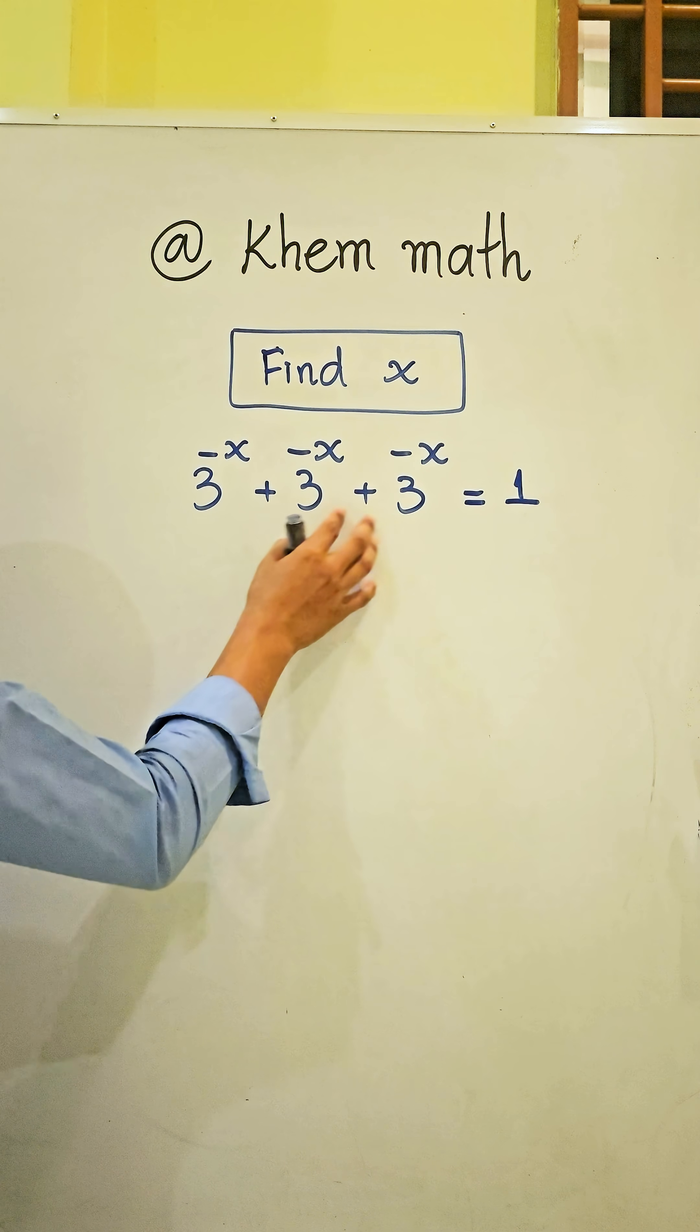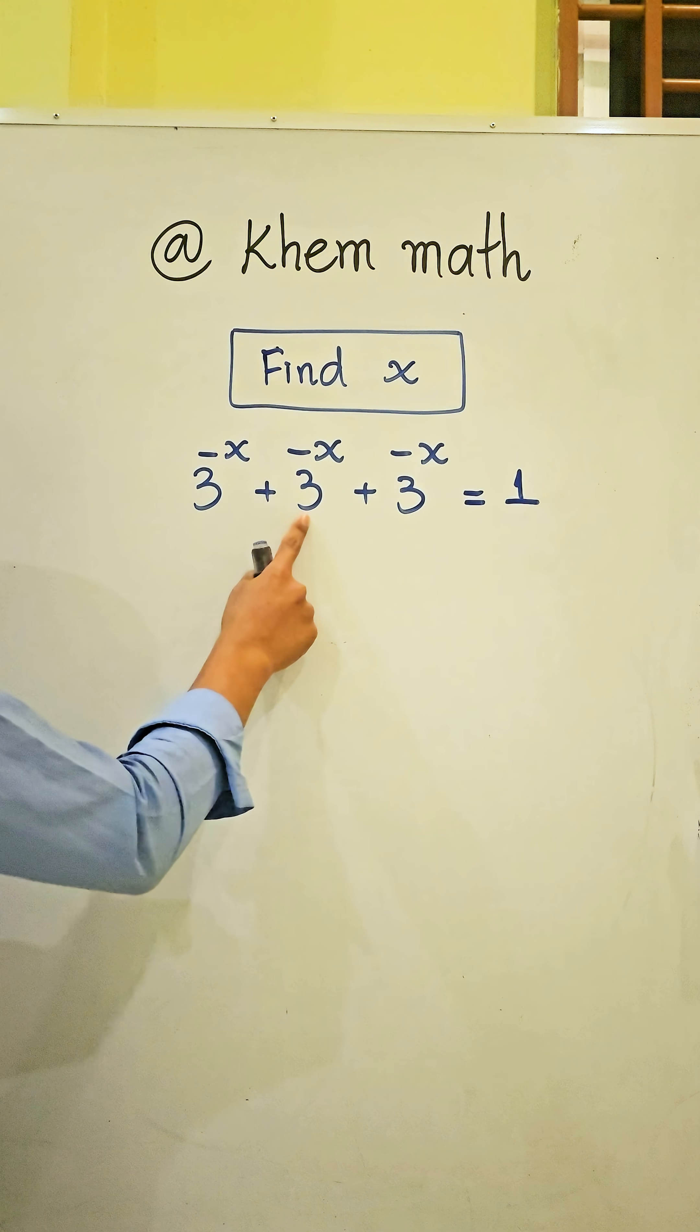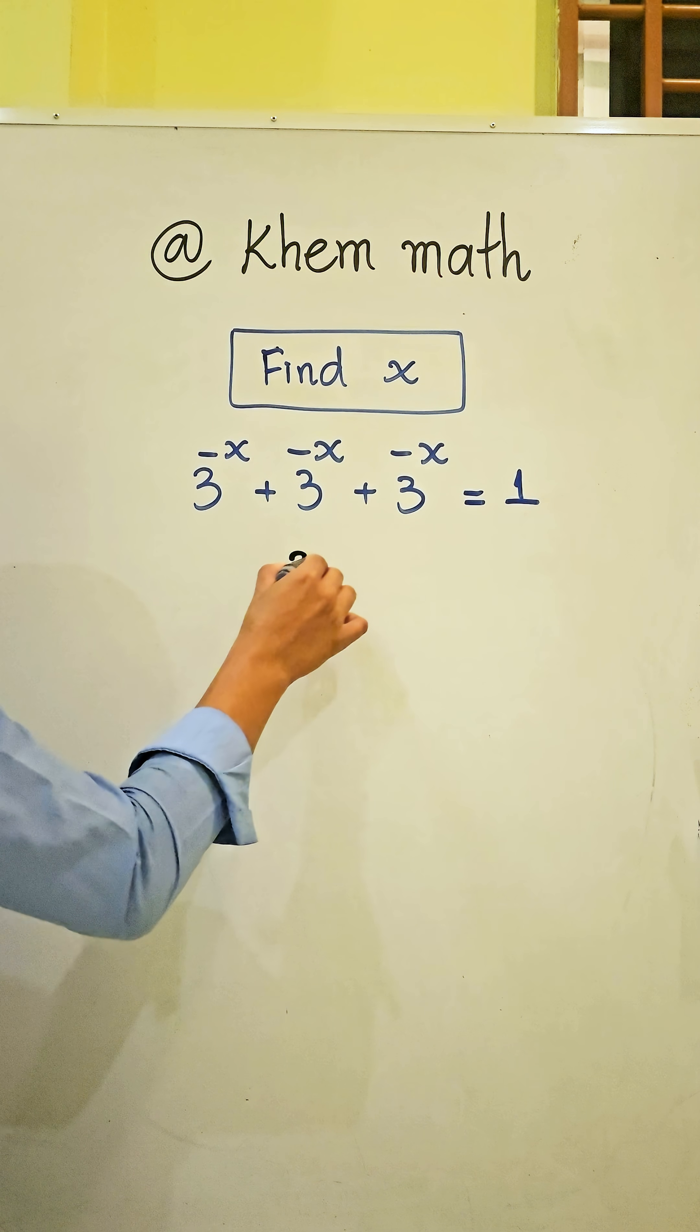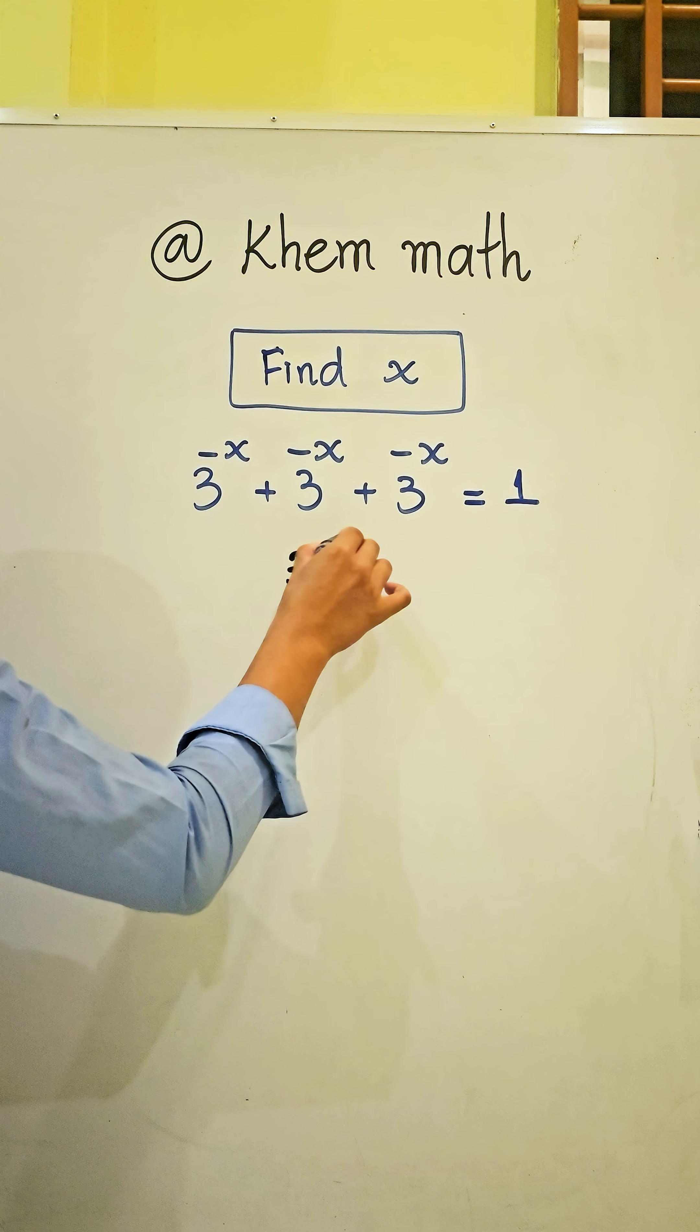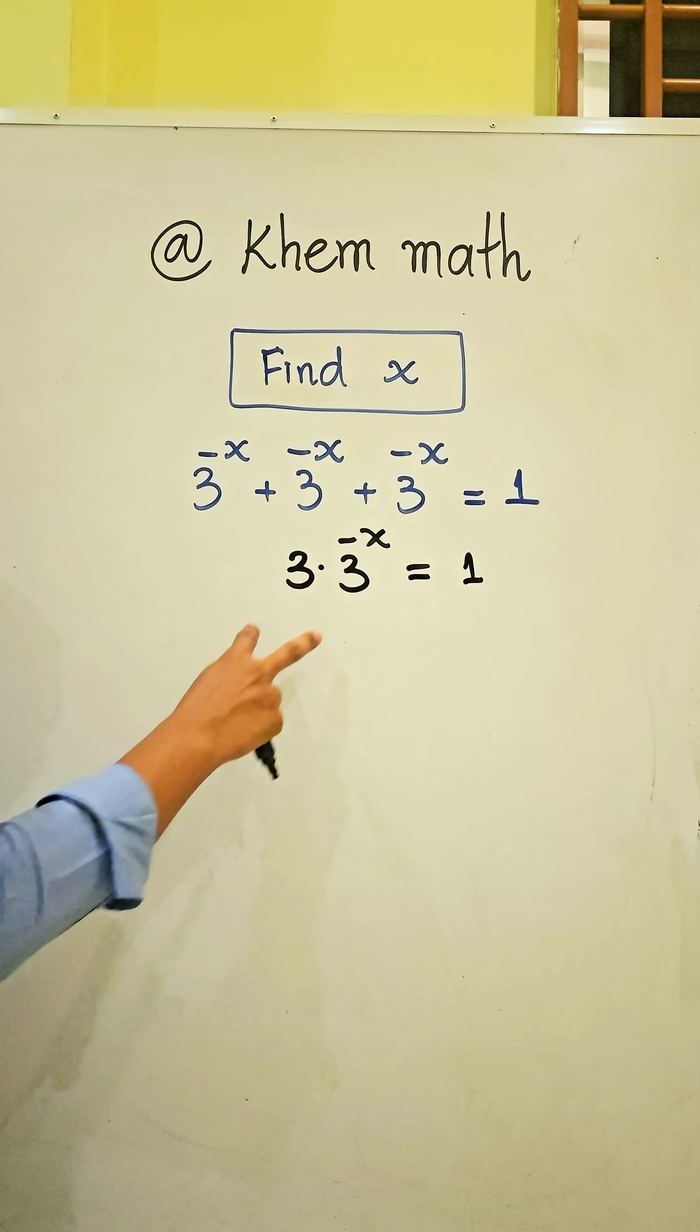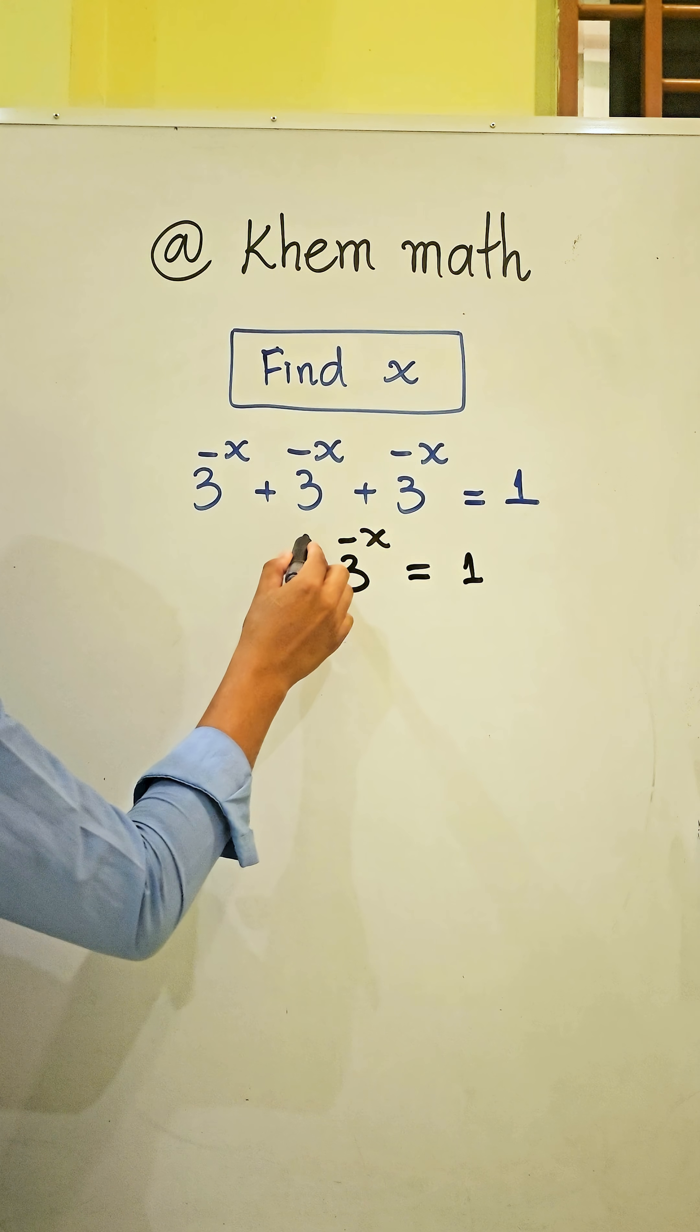It is the same, so 1, 2, 3 - that's 3 times 3 power negative x. So we can write 3 times 3 power negative x equals 1. And here it's 3 power 1, but we don't write it.